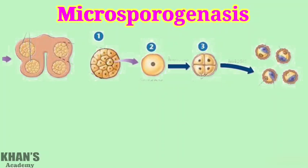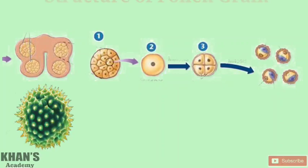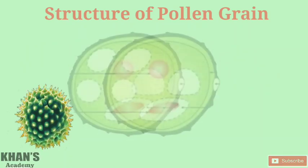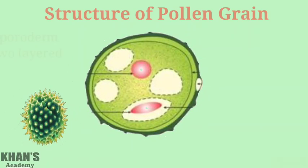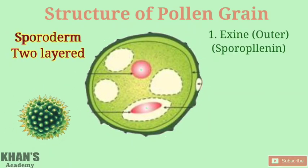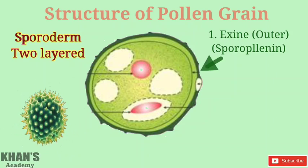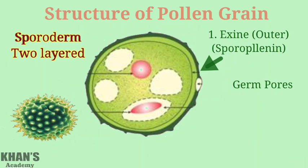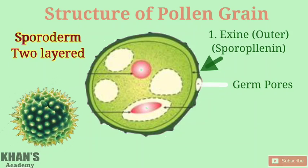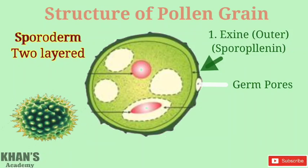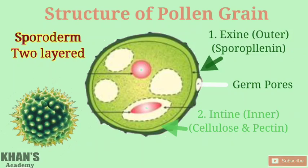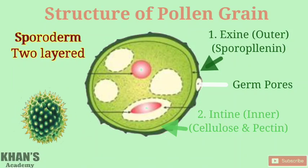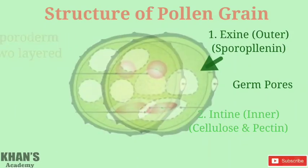Now we'll see the structure of a pollen grain or microspore. The microspore is surrounded by a two-layered wall called the sporoderm. The outer layer is the exine, which contains a substance called sporopollenin. This outer layer also shows germ pores for the emerging pollen tube. The inner wall layer of the sporoderm is the intine, which consists of cellulose and pectin.